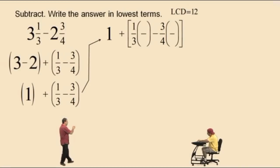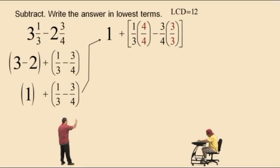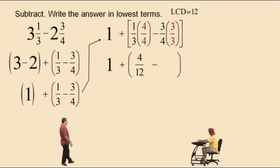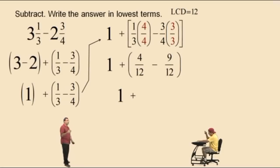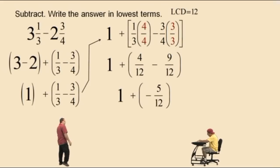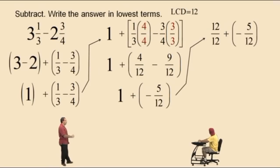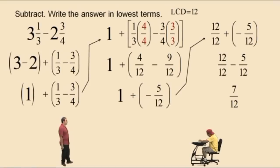So we're multiplying 1 third by 4 over 4, and 3 fourths by 3 over 3 because the denominator is controlling us — 4 times 3 is 12. So 1 third times 4 over 4 is 4 twelfths, subtract 3 fourths times 3 over 3 is 9 twelfths. And we have 1 plus 4 twelfths subtract 9 twelfths — same denominator, but 4 subtract 9 is negative 5, so we have negative 5 twelfths. Now we need to write the 1 as a fraction with a denominator of 12, which is 12 over 12. So we have 12 twelfths plus negative 5 twelfths — when you add a negative number you subtract its opposite — so it's 12 twelfths subtract 5 twelfths, and 12 subtract 5 is 7, so the answer is 7 twelfths.